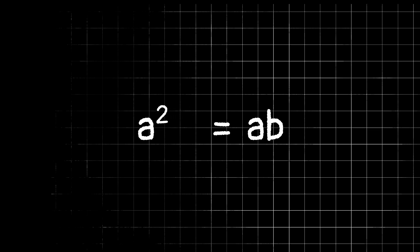Now let's subtract b squared from both sides, and again, since we're doing the same thing to both sides of the equation, we're all good to go. So we have a squared minus b squared equals a times b minus b squared.